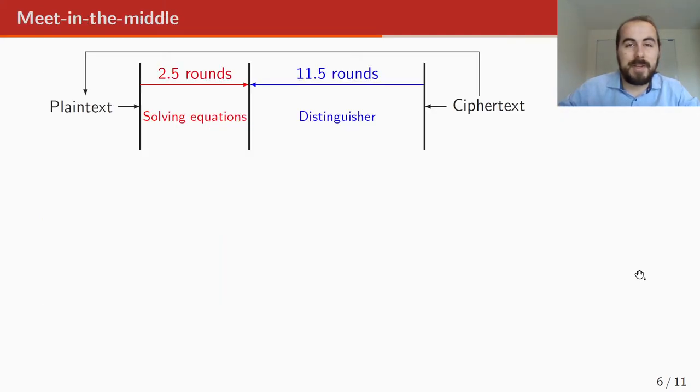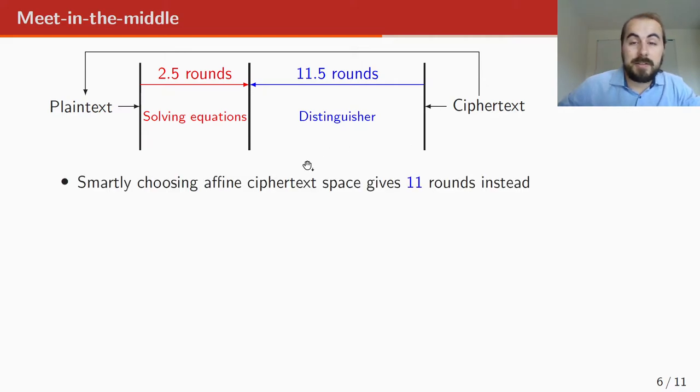Okay, so we cannot get to all rounds, so we do something of a meet-in-the-middle attack. We can get 11.5 rounds for this distinguisher. So the 0.5 rounds means half round, which is actually the linear layers, so the add-round key and the MixRows. Because they don't add to the degree, we can just include them in our function. We don't know exactly what this function looked like altogether, and if you want the algebraic normal form expression, that's not doable. But we know that applying this full vector space, we will get some constant values. If we choose this smart enough, then we can go to 11.5 rounds, with a vector space of dimension 94. So that's what we're going to do.